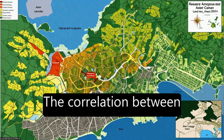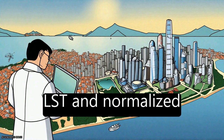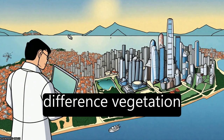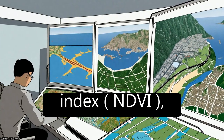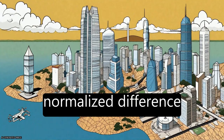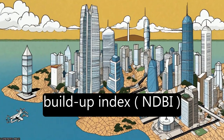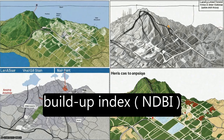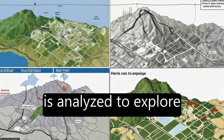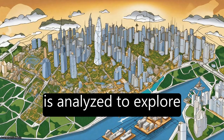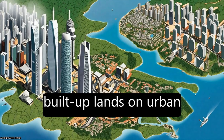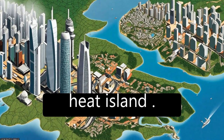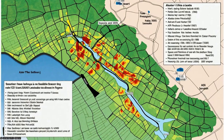The correlation between LST and Normalized Difference Vegetation Index (NDVI) and Normalized Difference Buildup Index (NDBI) is analyzed to explore the impacts of green and built-up lands on urban heat island.